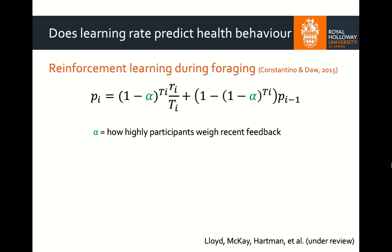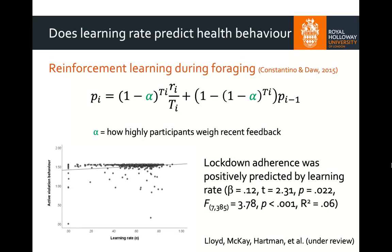We wanted to leverage this framework to understand whether or not weighing recent feedback higher would predict people being better able to adapt to the new social distancing measures during the COVID-19 pandemic. In order to test this, we used a foraging task, which meant we needed to use a slightly different computational model, but the key thing is that we still had the alpha parameter measuring participants' learning rate. We asked participants to complete the task and ran this model over their behavior to estimate their alpha value. We found a large range of individual differences in how highly participants weighed recent information. Using this in a regression to predict how well participants adhered to lockdown behaviors, we found — consistent with our pre-registered predictions — that higher values on this learning rate predicted greater adherence to lockdown measures, supporting rational models of decision making applied to the novel context of the COVID-19 pandemic.